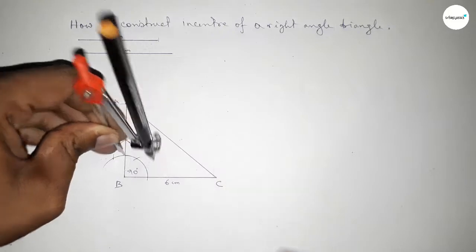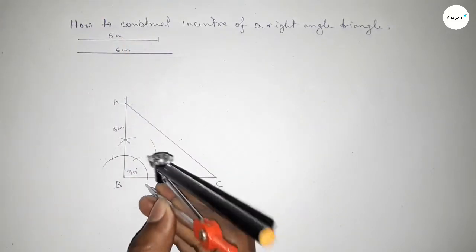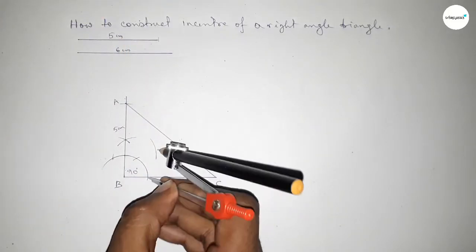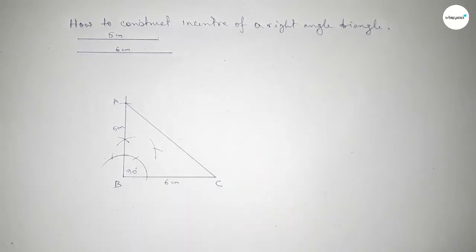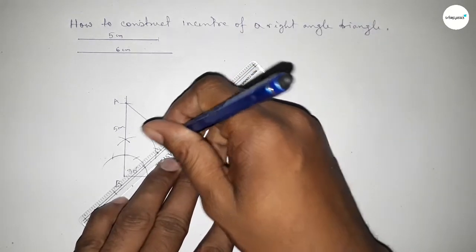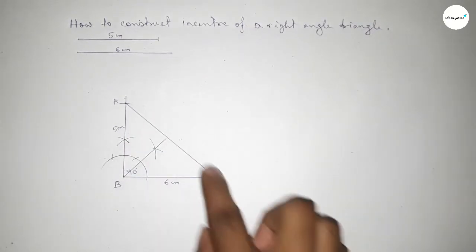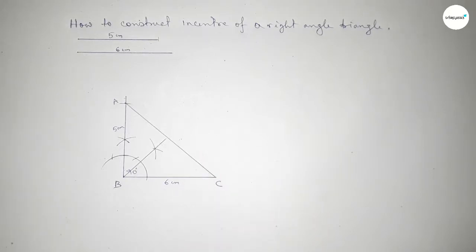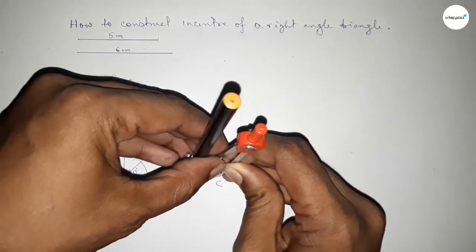Now first bisecting angle B. Putting the compass here and taking greater than half, drawing an arc and cutting here. Both curves intersect at a point. Now joining this bisector.